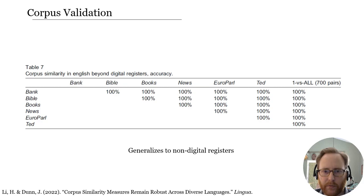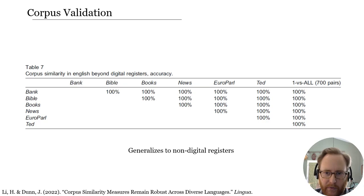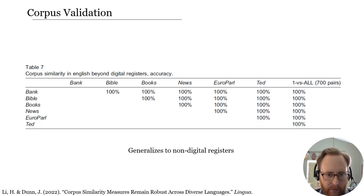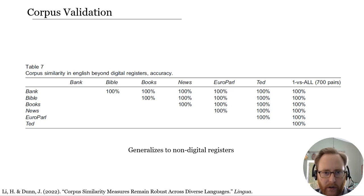The other question is to what degree this extends beyond registers. A lot of our data is from digital sources — the web or Wikipedia — so what if we try to use these measures on much more traditional written sources like books, bank documents, or parliamentary proceedings? We can also use the same method to look at many different registers. In both cases we're asking how well this generalizes, and in fact it does generalize well.